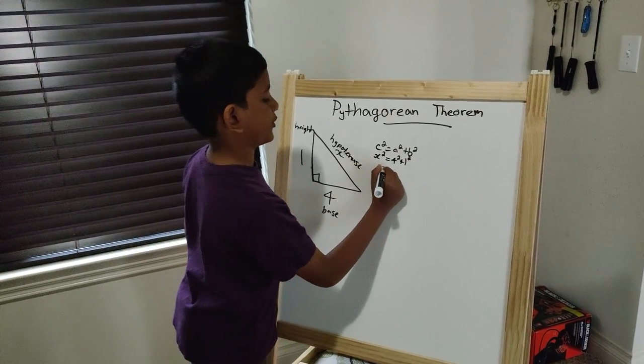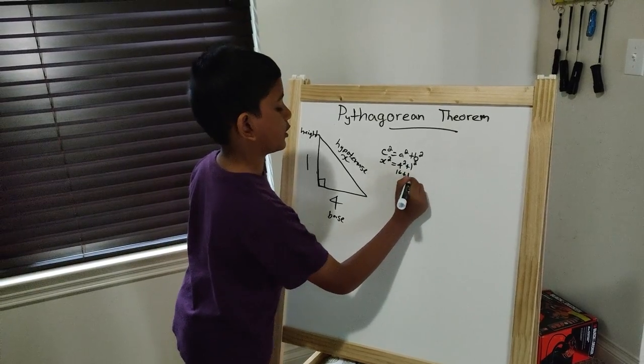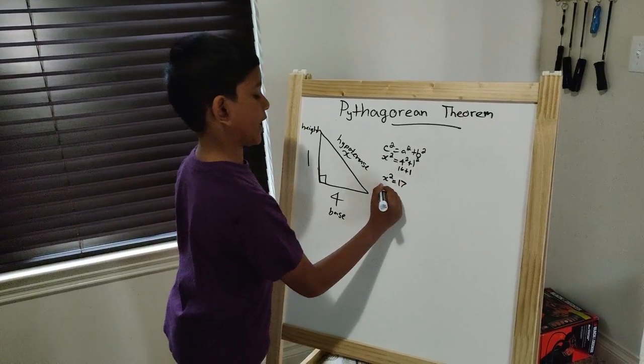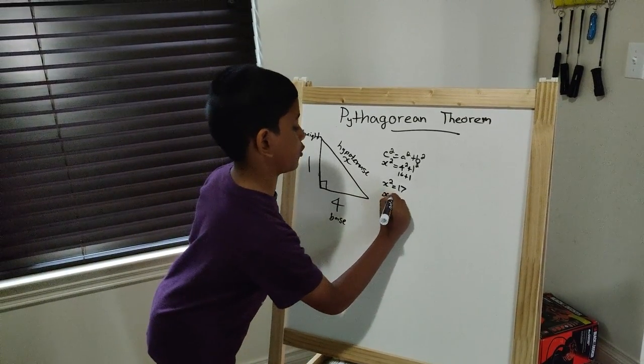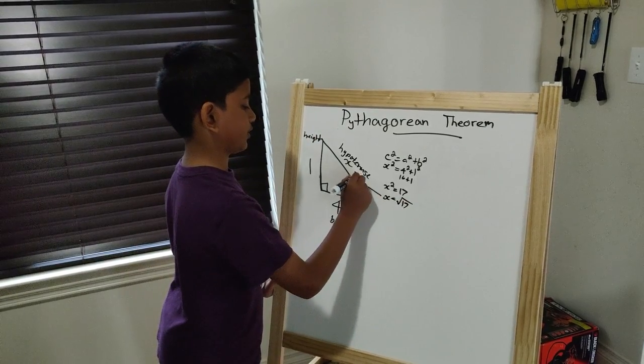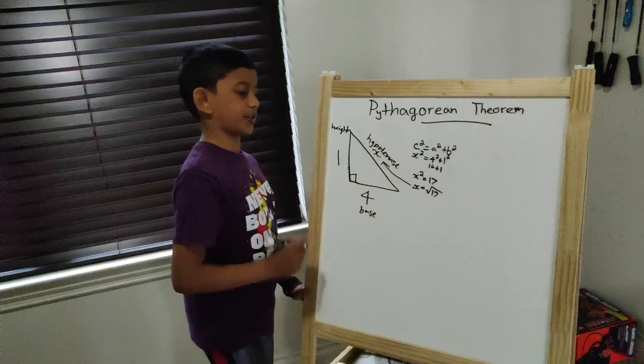To simplify this, 4² is 16 plus 1² is 1. Now, x² equals 17, and you only want to find x, so x would equal the square root of 17. This is the final answer. Now, try another example.